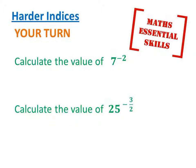Okay, the top one: 7 squared is 49. The negative makes it 1 over 49.